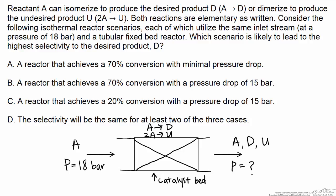And this question asks us to determine which of the configurations A through C, or perhaps some combination D, will lead to the highest selectivity to the desired product D. So please select one of these answers that you think corresponds to the correct solution to this problem.